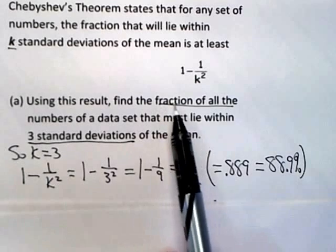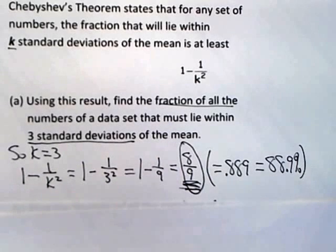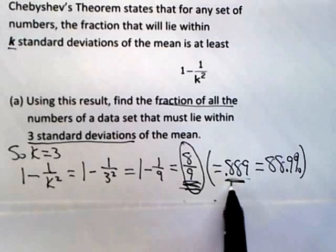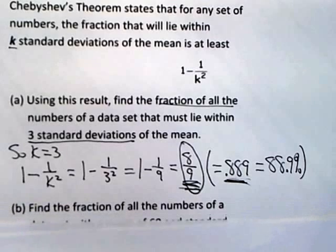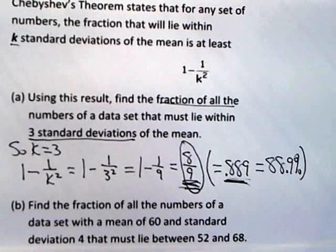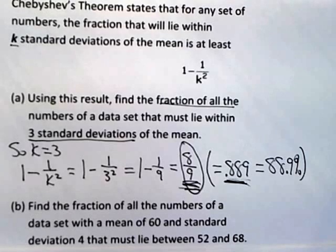The problem as stated asks for the fraction, so 8 ninths is the answer they wanted. But if they ask for the probability of a number being within three standard deviations of the mean, the decimal form may be what they're looking for. Part B says: find the fraction of all the numbers of a data set with a mean of 60 and a standard deviation of 4 that must lie between 52 and 68.